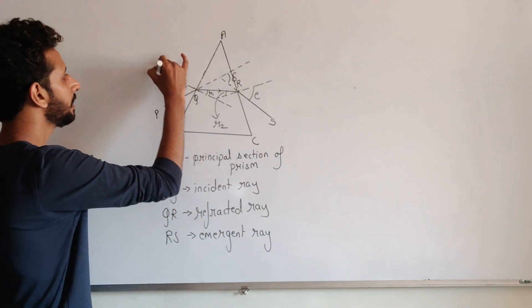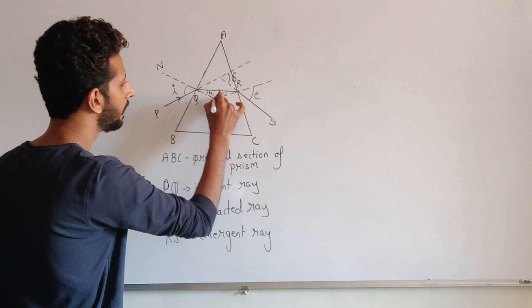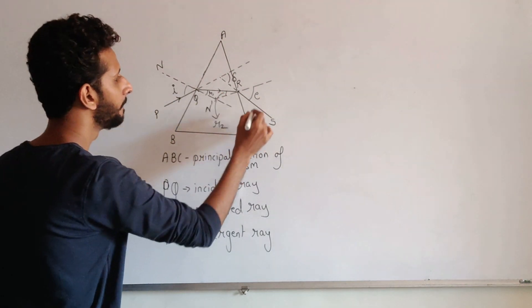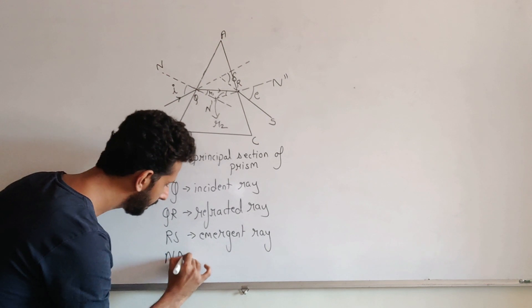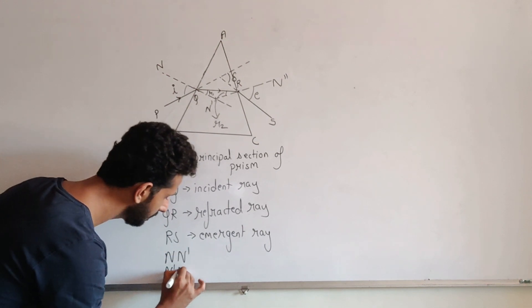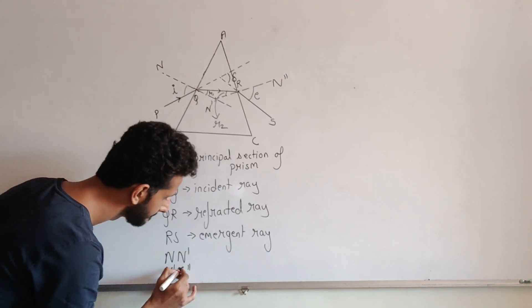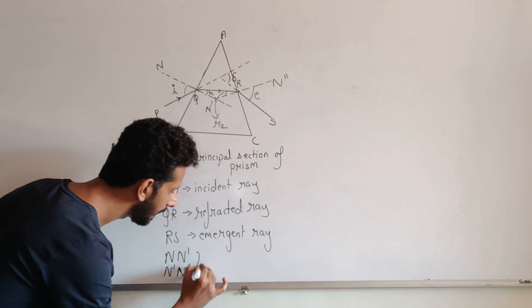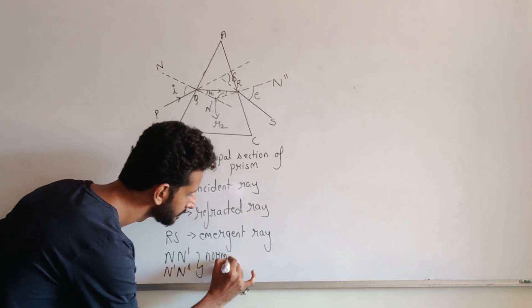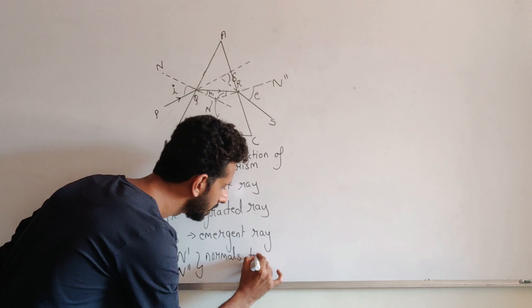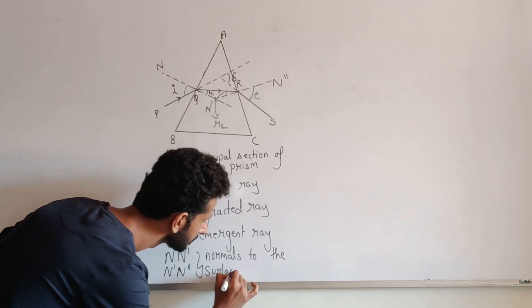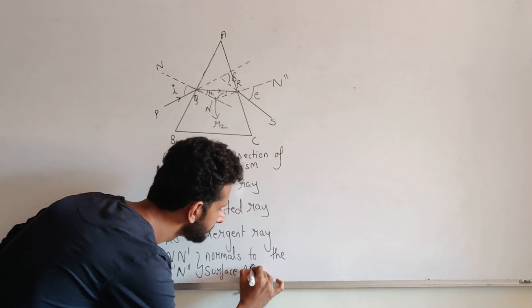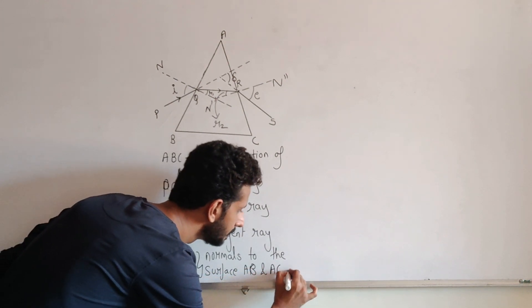RS is your emergent ray. The normals are N, N prime, N double prime. N N prime and N prime N double prime are the normals to the surface AB and AC respectively.